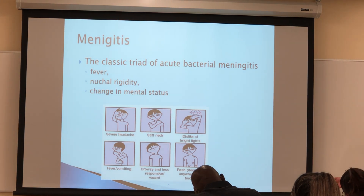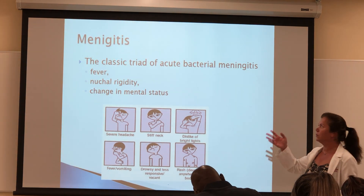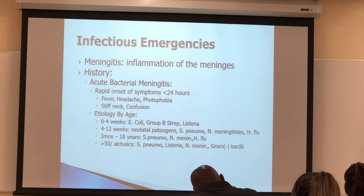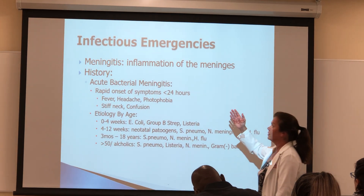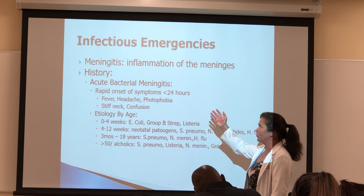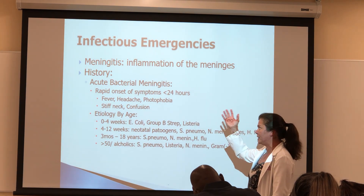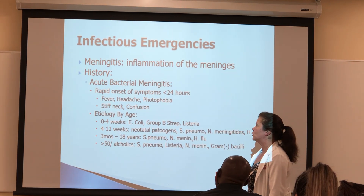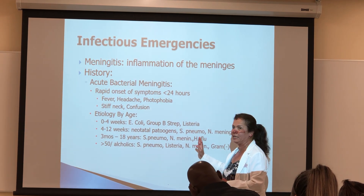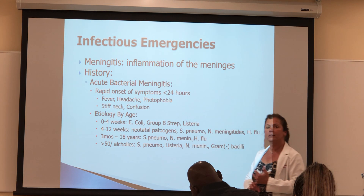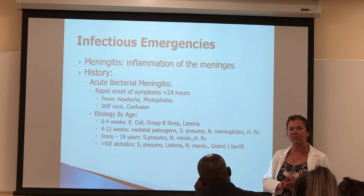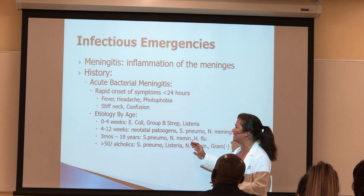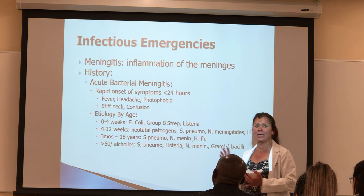You know about the classic triad of meningitis: fever, nuchal rigidity, and altered mental status. This patient also had photophobia. The patient was confused and had a stiff neck. Even though the most common adult pathogens are Strep pneumoniae, Haemophilus influenzae, and Neisseria meningitidis, it can also be present in immunosuppressed and alcoholic patients.